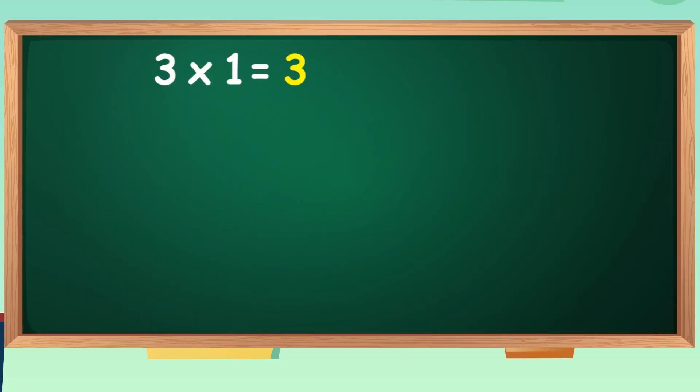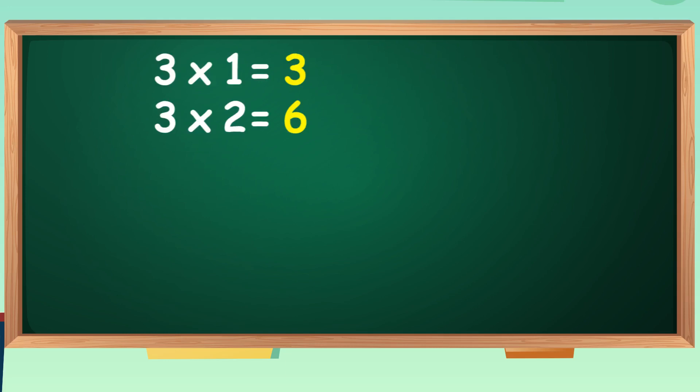Three ones are three. Three ones are three. Three twos are six. Three twos are six. Three threes are nine. Three threes are nine. Three fours are twelve. Three fours are twelve.